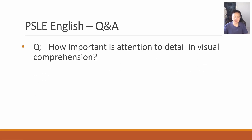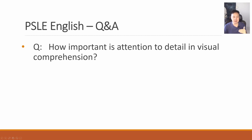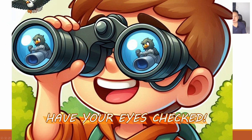How important is attention to detail in visual comprehension? Very, very important. The answer could be in a small piece of text hidden somewhere at the bottom of the visual, and students just miss that. They only notice the big attention-catching items and ignore the details. That's how they miss the answer. Sometimes even looking at it multiple times they still cannot find it — this comes with practice and experience.